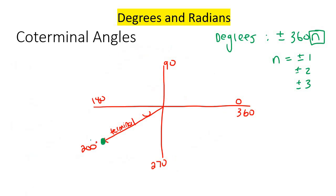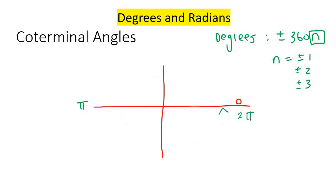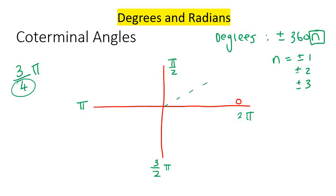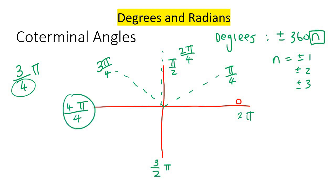Now if we are working in radians, then we don't have degrees. So this would be 0. When you go around there, that's pi. If you go all the way back, that's 2 pi. What's halfway between 0 and pi? That's pi over 2. Halfway between pi and 2 pi is 1.5 pi, or the same as 3 over 2 pi. So let's say we have an angle that is 3 over 4 pi. To work out where that would be, I break the top part into 4 equal parts: pi over 4, 2 pi over 4 (same as pi over 2), 3 pi over 4, and 4 pi over 4 (same as pi).